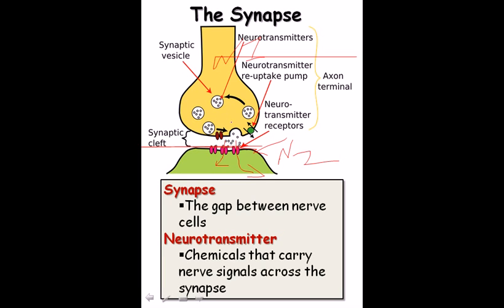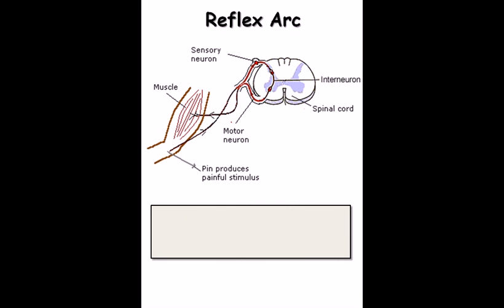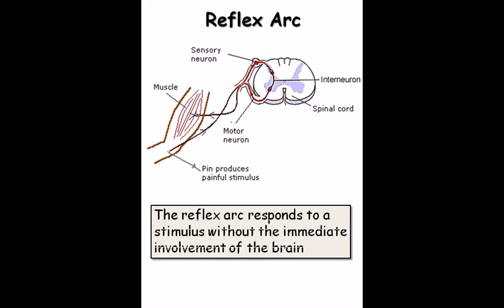Neurotransmitters are chemical carriers for the signals. Nerve signals travel somewhat like electricity in terms of voltage, but these impulses are produced and transferred via chemical mediators.